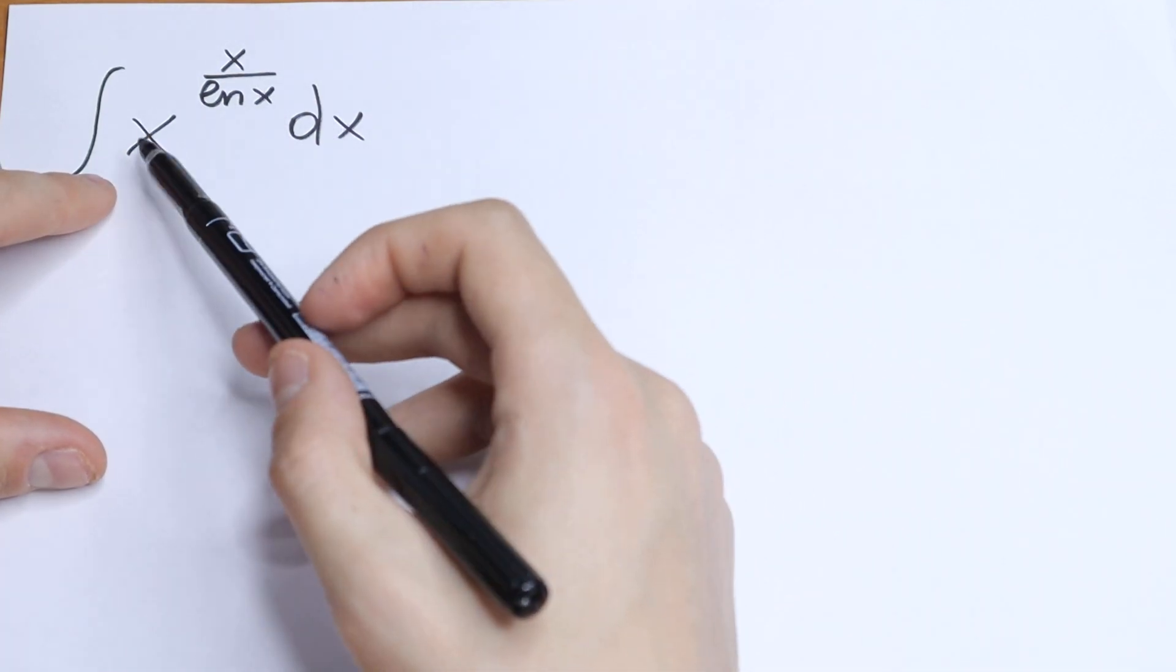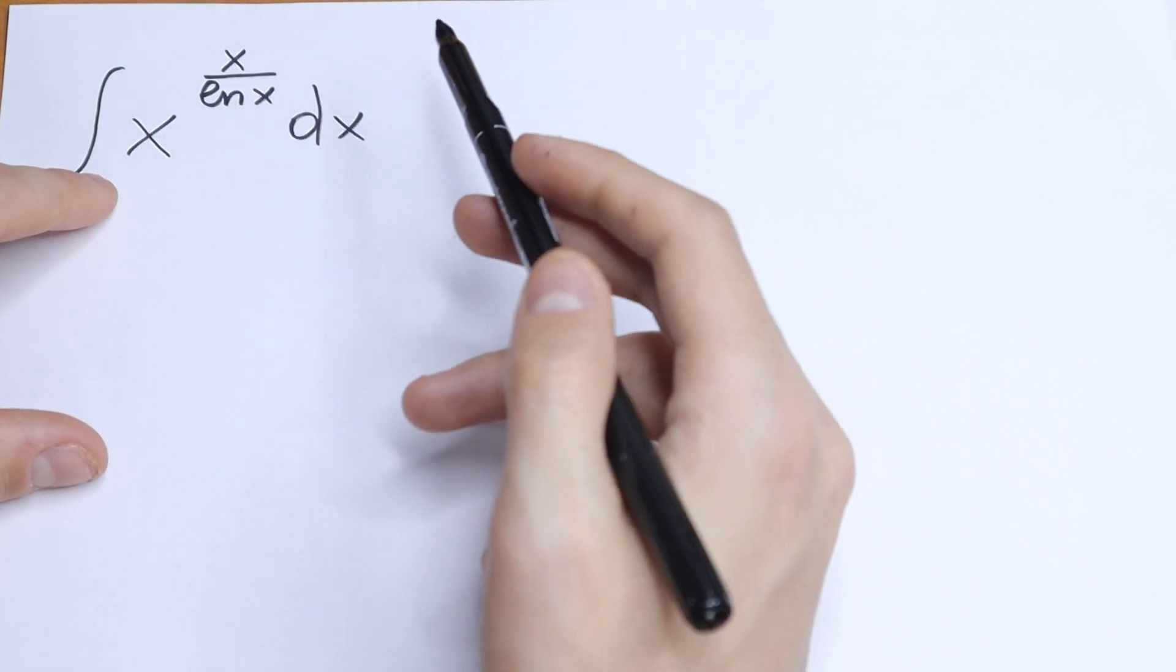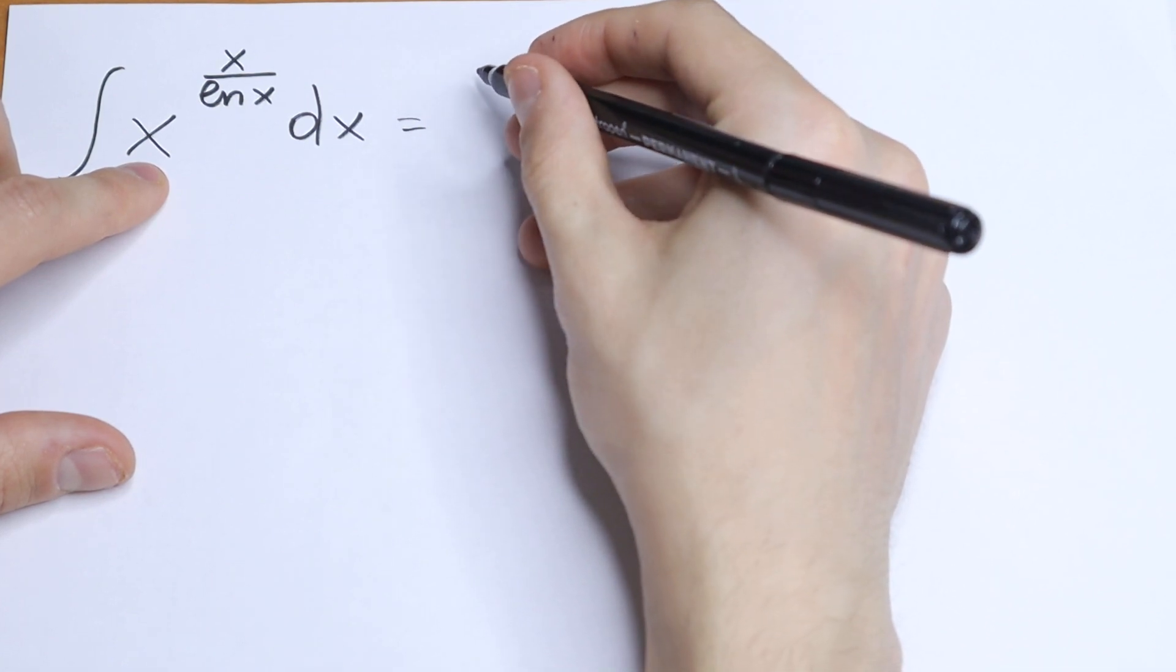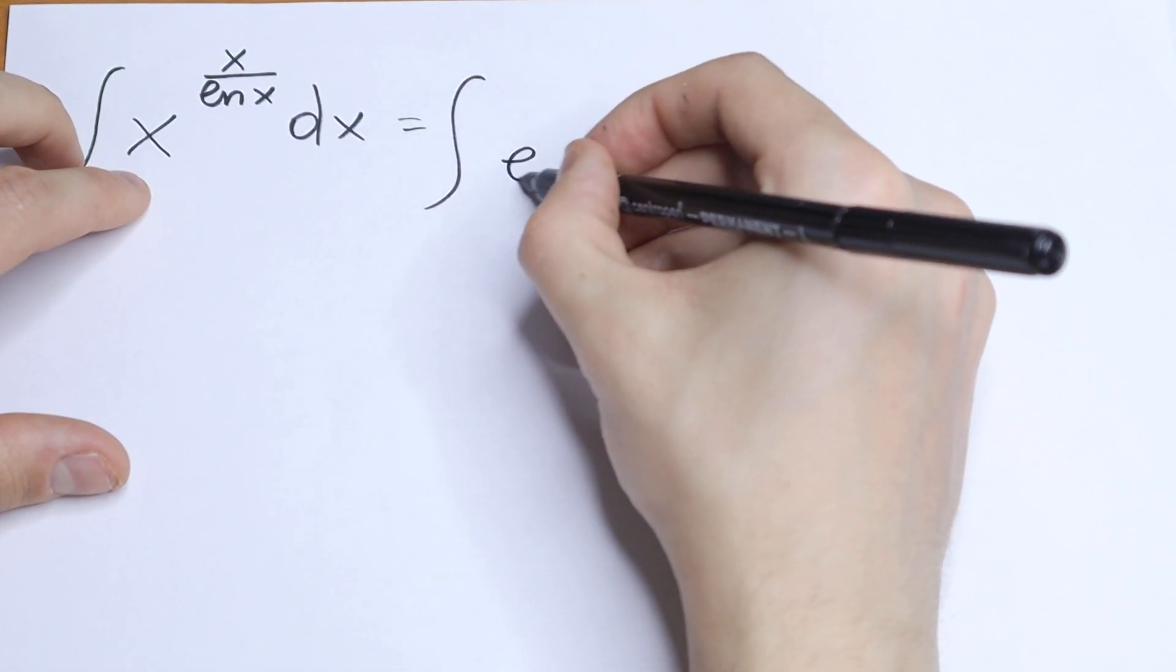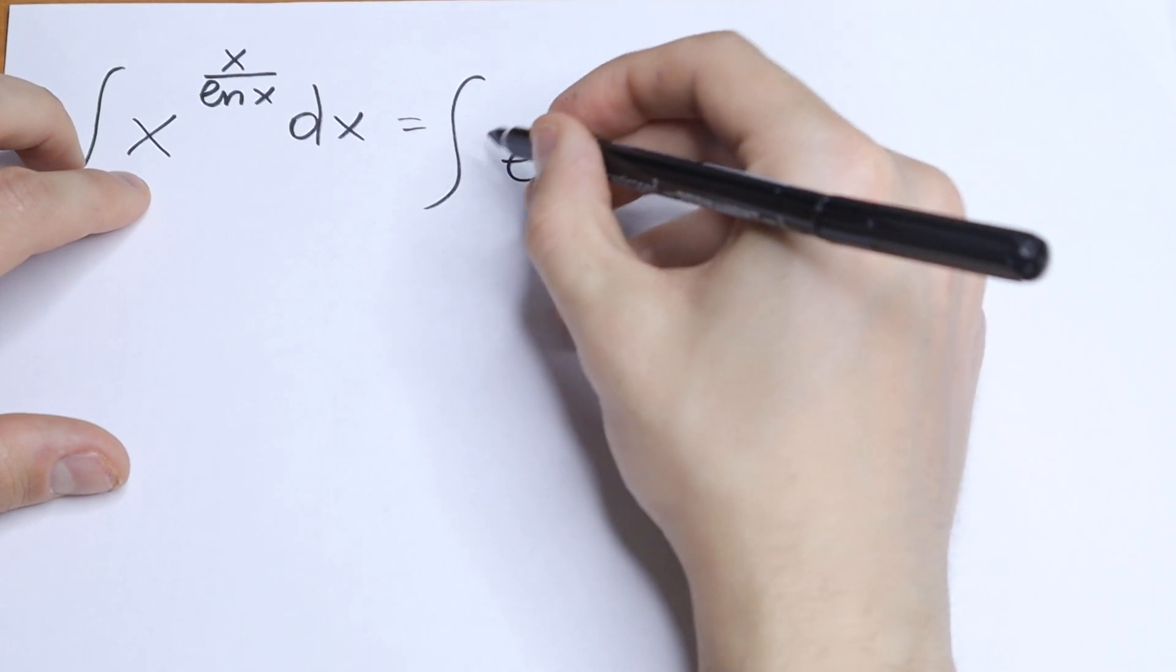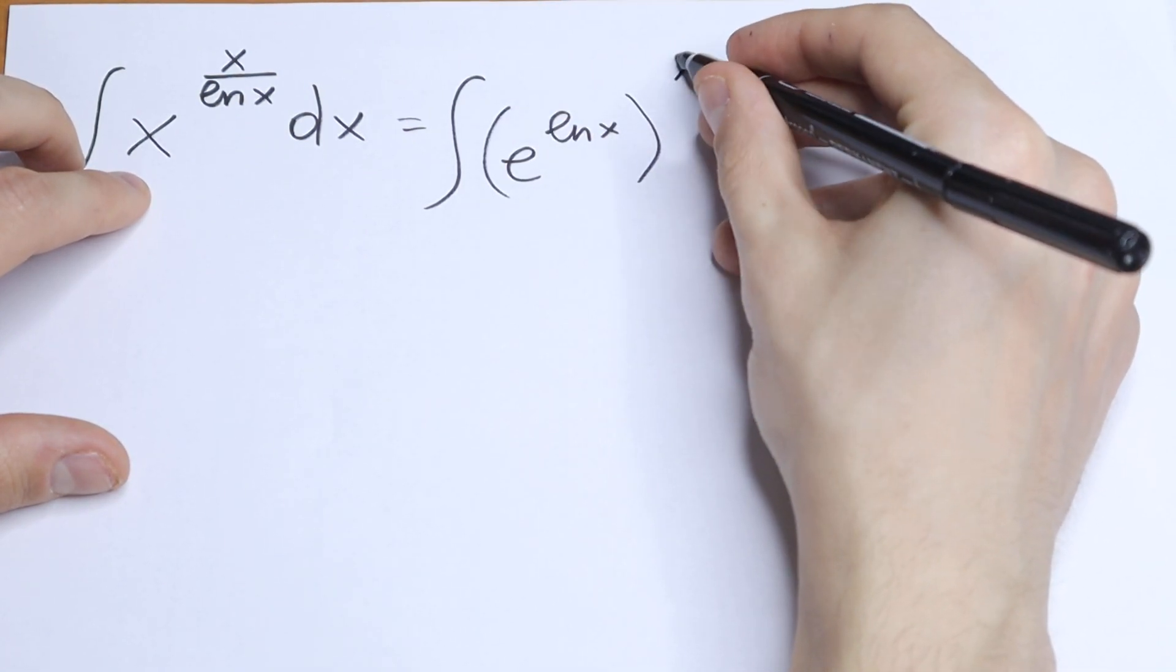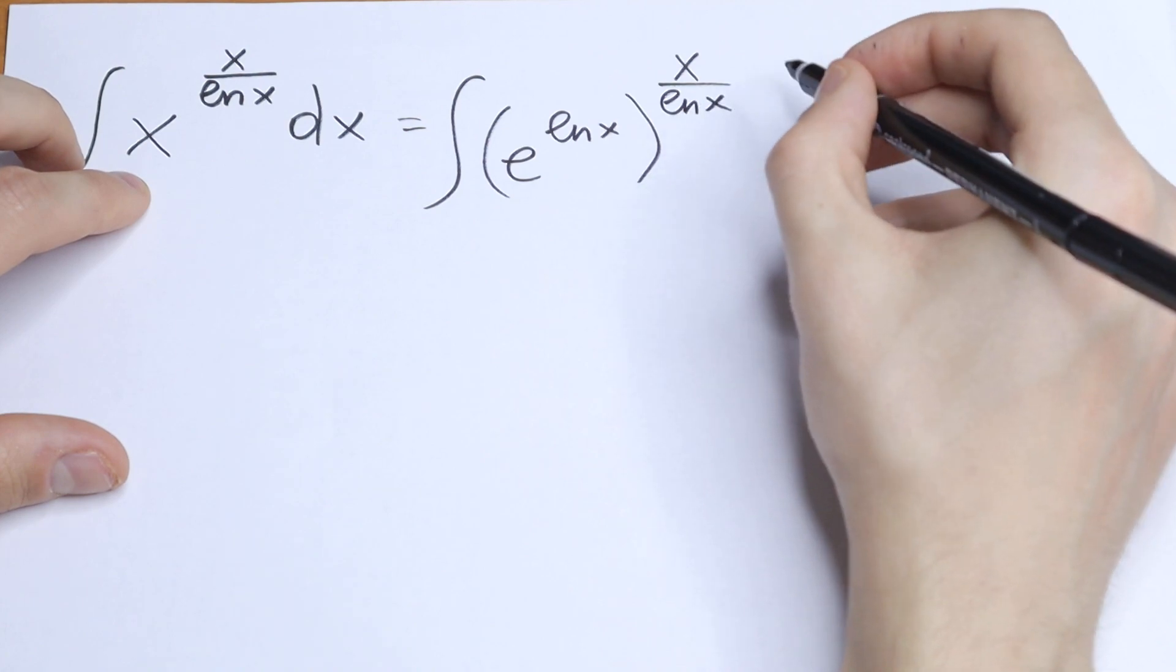But take a look, if we express this x as e to the power natural log x, so let's write it. It will be equal to the integral of e to the power natural log x raised to the power x over natural log x dx.